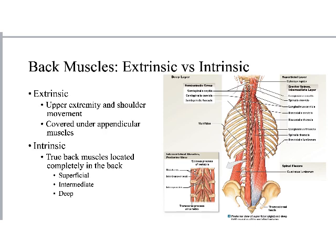We'll talk about some back muscles, but not many of the deep ones here. The deep back muscles surround the vertebral column and help it be stable, flex, and extend — there are many of them but you don't need to learn them by name. We'll cover the extrinsic ones when we do the appendicular muscles. The deep vertebral column muscles are necessary for flexion, rotation, and extension of the back.